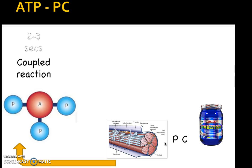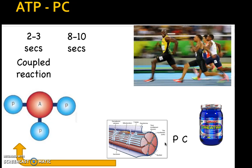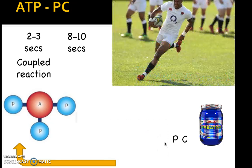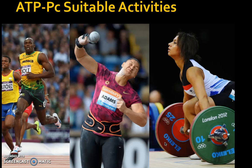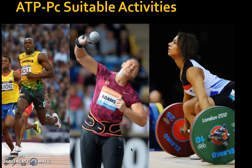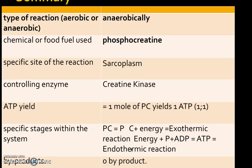Our ATP system only lasts about two to three seconds, but with the addition of phosphate creatine we can now sustain a high-energy burst for up to about eight to ten seconds. That's plenty of time to run 100 meters if you're Usain Bolt, or to accelerate like Anthony Watson, one of the fastest wingers in the England rugby team. Other suitable activities include the clean and jerk, shot put, or hammer throw — high energy efforts lasting around eight to ten seconds.